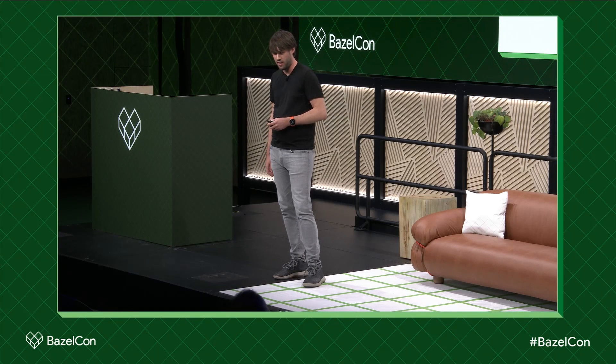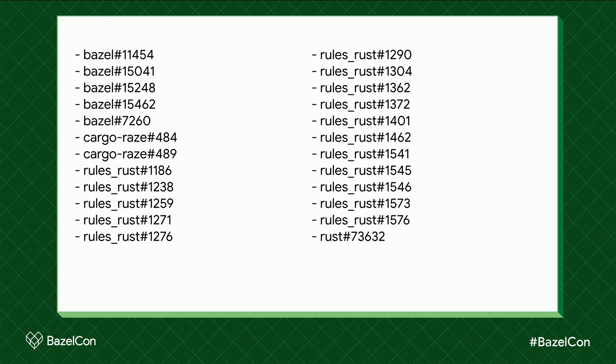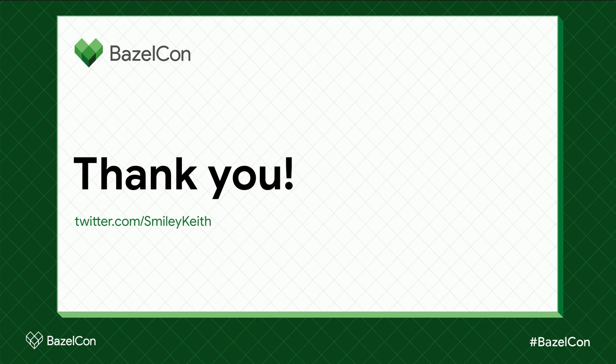I made a repo if folks want to mess around with it. It has an iOS and an Android app calling some Rust APIs, and you can run them and see all the workarounds. I also put in a ton of comments so you can see all the details. I also upstreamed this to the rules_rust repo, so changes to rules_rust are now tested against mobile platforms as well. I also have a huge list of relevant issues — I'll tweet a link afterwards. Thanks everyone, I'm happy to talk about this more in the hall.